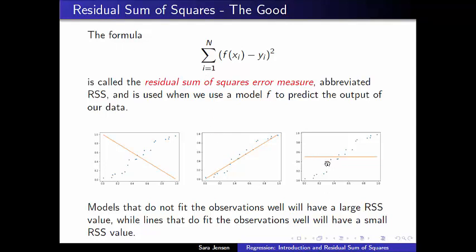Similarly over here, there are a handful of observations that are close to this predicted output value, but a lot of the observations are very far away from the predicted output value. And so I will have large individual differences,